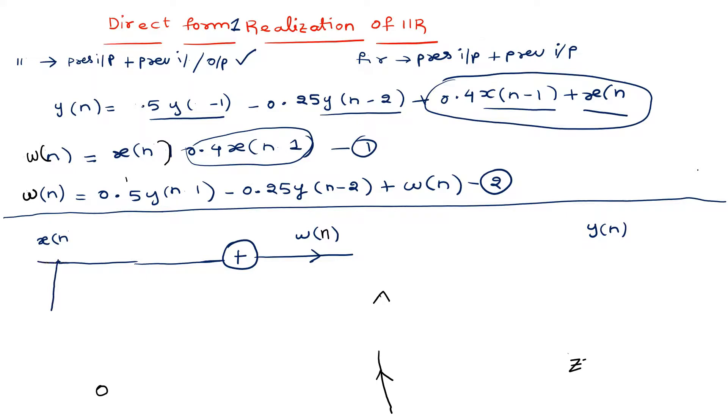x(n) goes to a delay block. The delay block is z^(-1), so its output will be x(n-1).